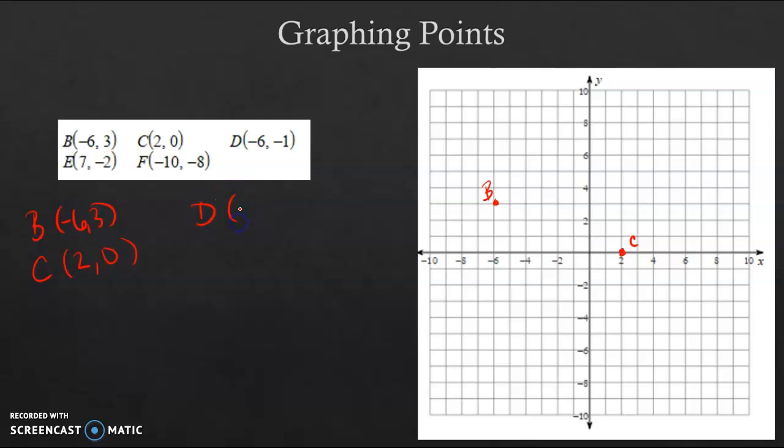D is at (-6, -1). So that means left 6, down 1. So left 6, down 1. And there's my point D.